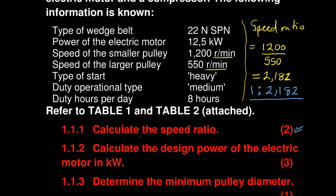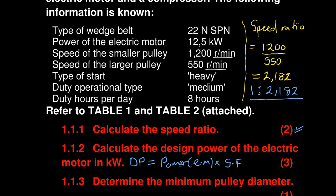The next question says calculate the design power of the electric motor in kilowatt. The formula is: Design Power (DP) = Power of the electric motor (EM) times the service factor (SF). You can always refer to the formulas. You now need to find both parts of the formula: the power of the electric motor and the service factor.